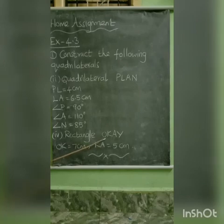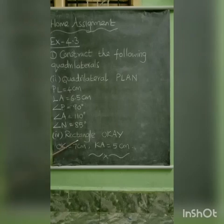Then number 4: rectangle OKAY. To form that rectangle: OK equal to 7 cm, KA equal to 5 cm. Here, two adjacent sides only given, angles are not given. In a rectangle, 4 angles are equal and also 4 angles are right angles. You take the angle measuring is 90 degree, each angle measure is 90 degree in a rectangle. Okay, thank you.